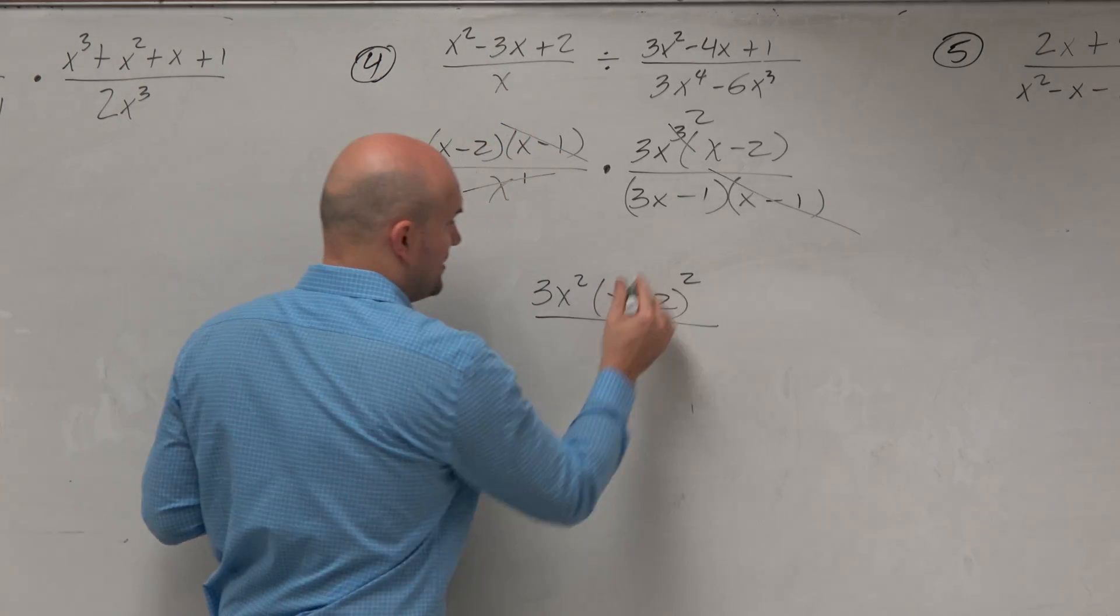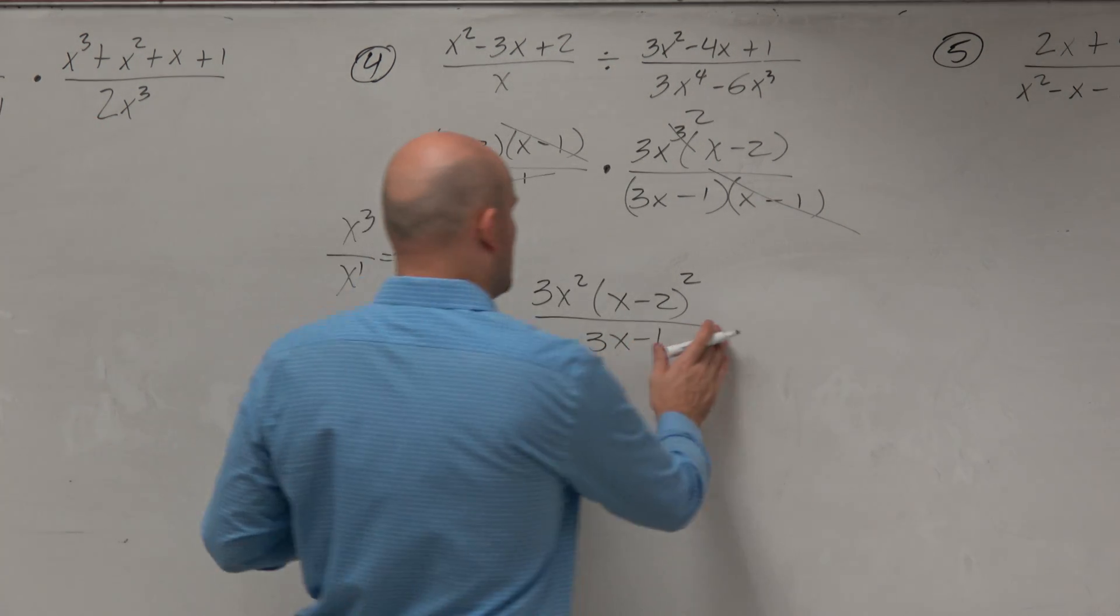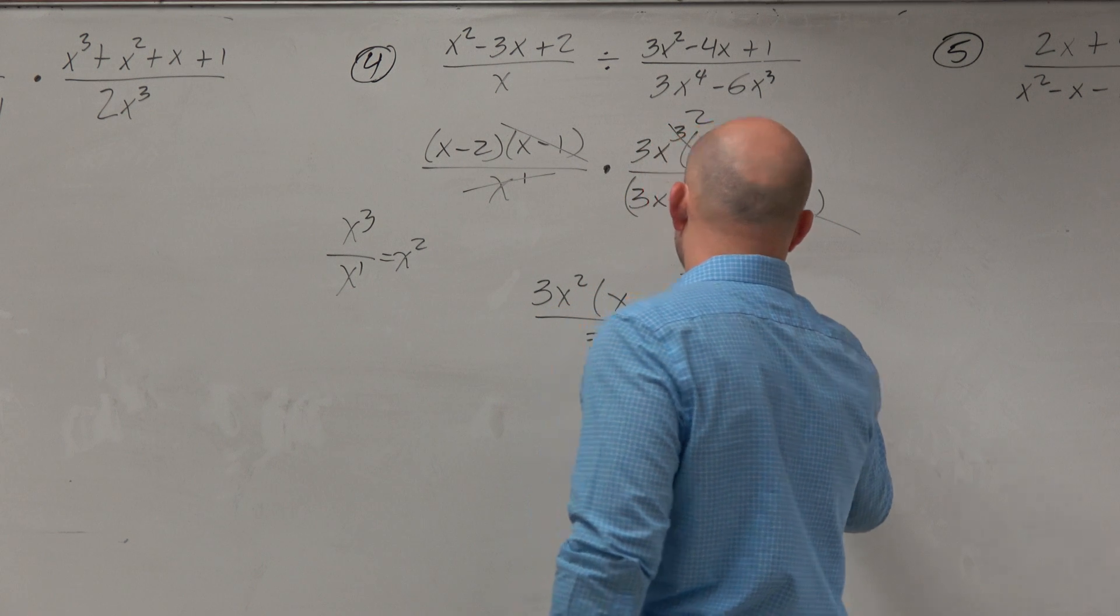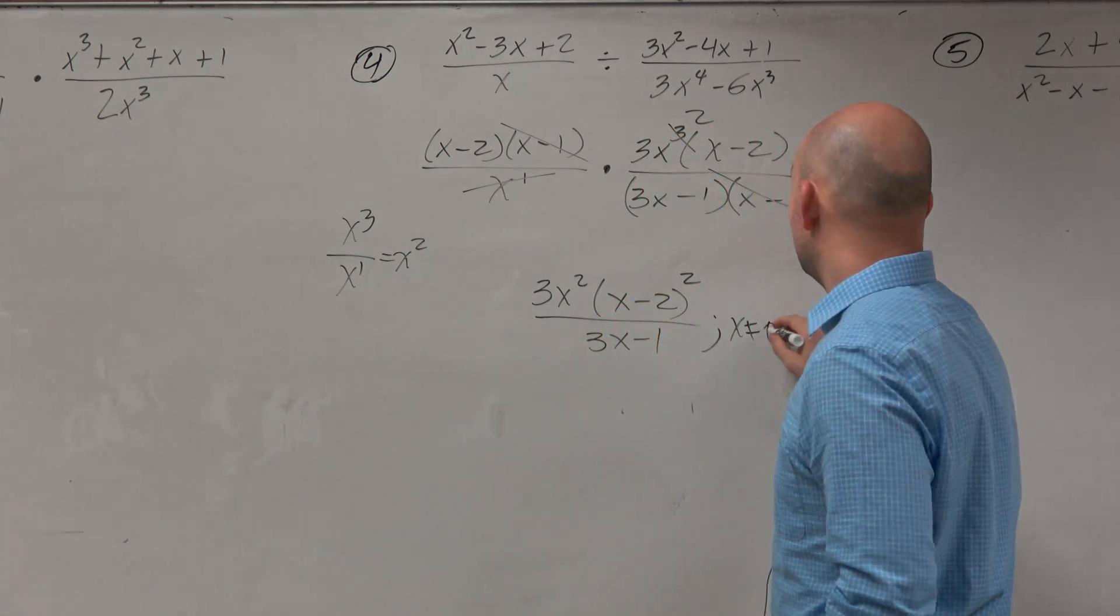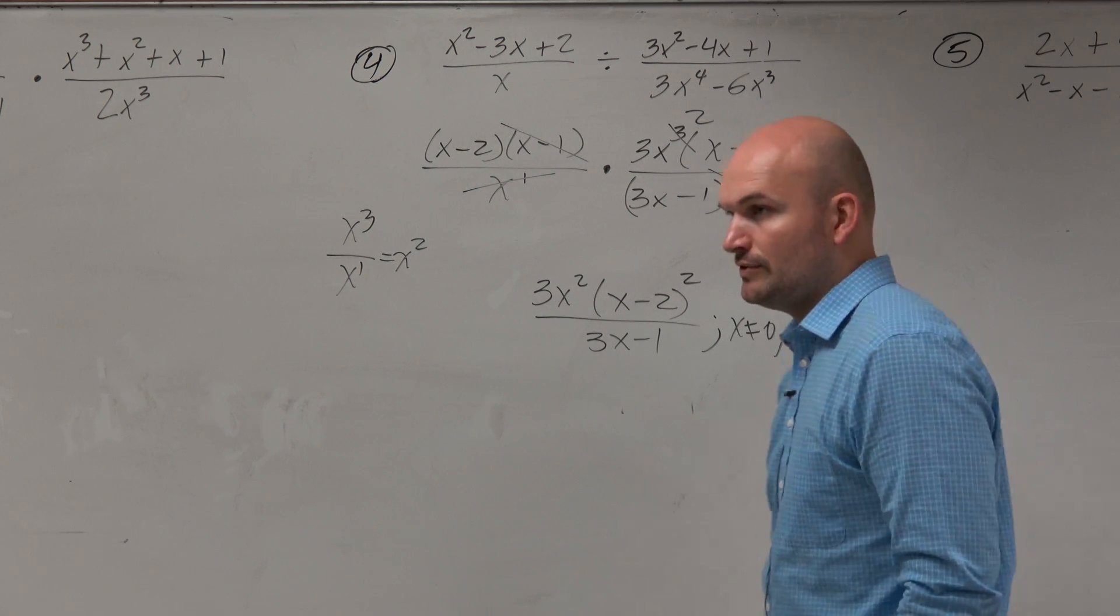And then for my denominator, I just have 3x minus 1. So therefore, we see, well, what values then make my denominator equal to 0? x cannot equal 0, 1, and a positive 1/3. Now, I've got a 3x squared.